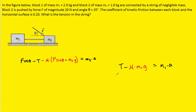Now, because the blocks are attached to the string, they're going to be accelerating at the same rate as each other. So the accelerations are going to be the same, which is why we just call the acceleration a in each formula as opposed to a2 and a1. The accelerations are the same, so we've just used a. We can solve these equations for a — in the first case, we could divide both sides by m2 so it cancels out on the right-hand side.